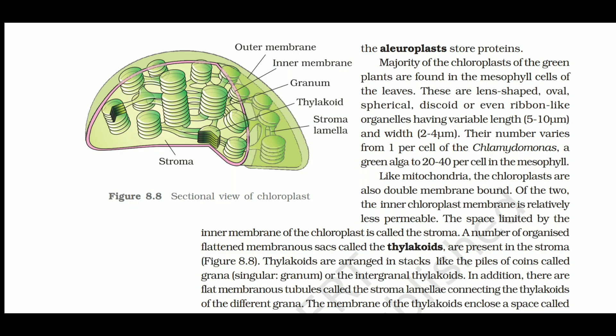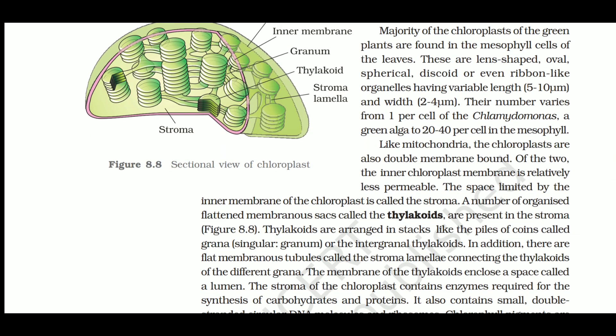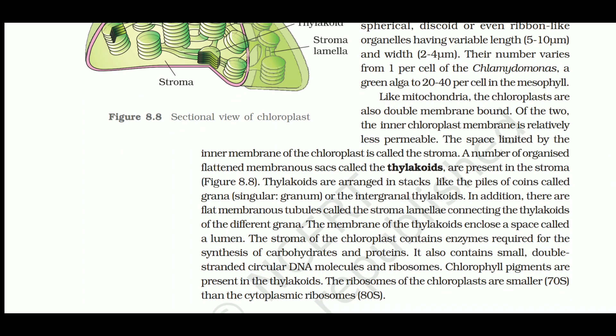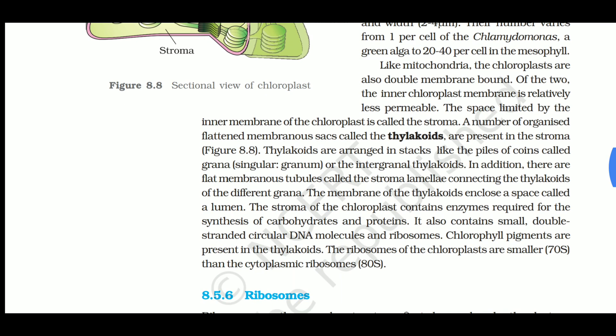The majority of chloroplasts in green plants are found in the mesophyll cells of leaves. They are lens-shaped, oval, spherical, discoid, or even ribbon-shaped organelles with a varying length of around 5 to 10 micrometers and a width of 2 to 4 micrometers. Their numbers vary from 1 per cell in Chlamydomonas (a green alga) to 20 to 40 per cell in mesophyll cells.